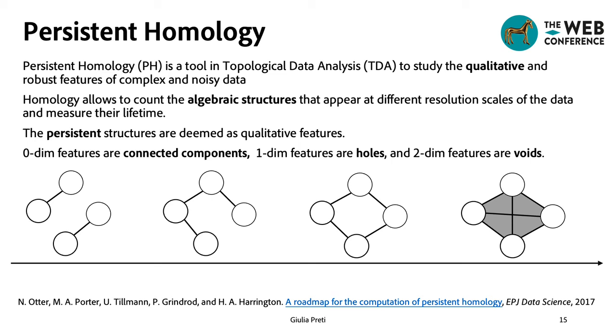Here, for example, in the first step of the process, persistent homology identifies two connected components. In the second step, the two connected components merge and form a single connected component.